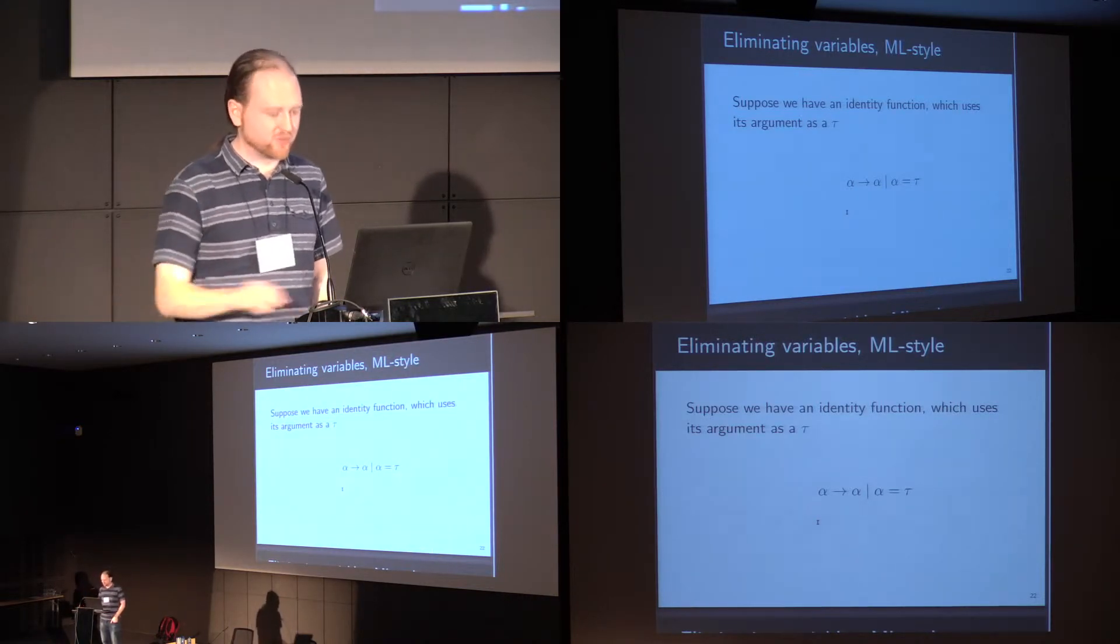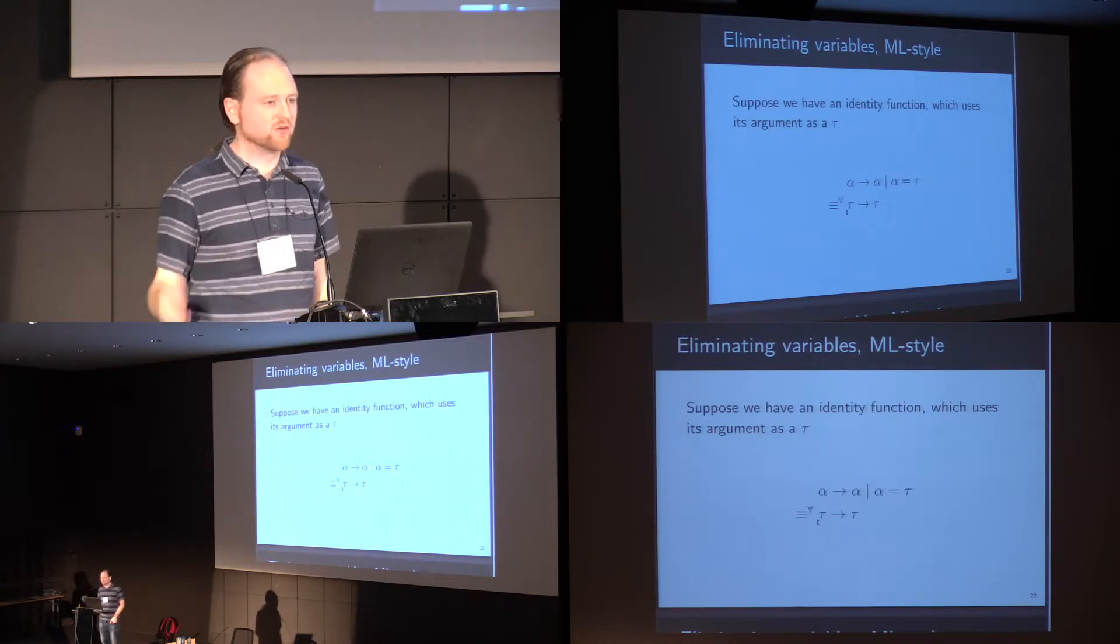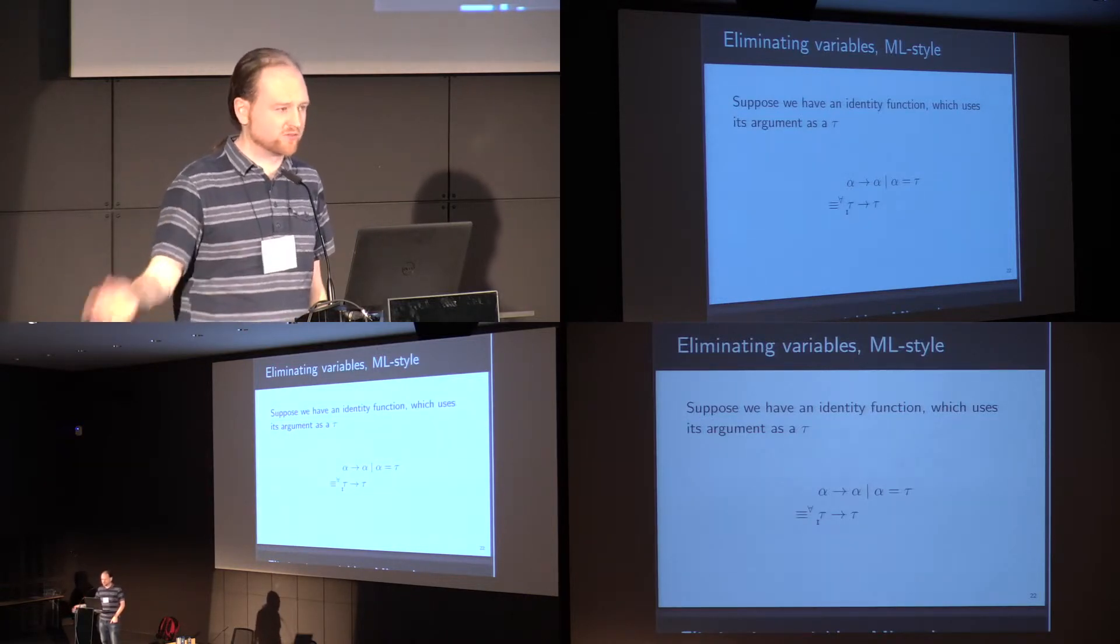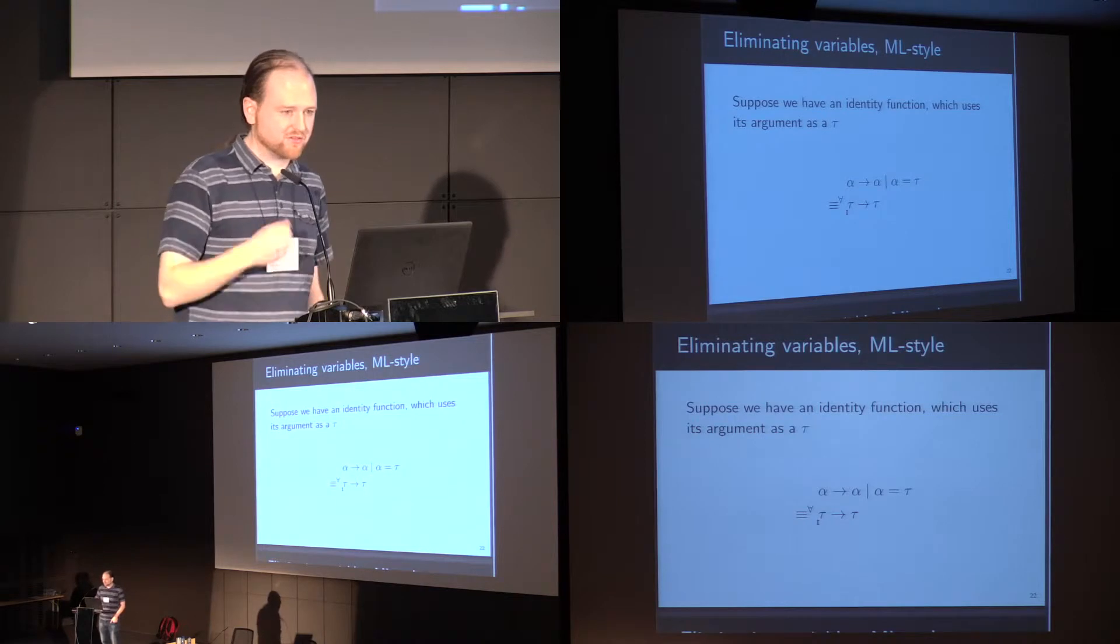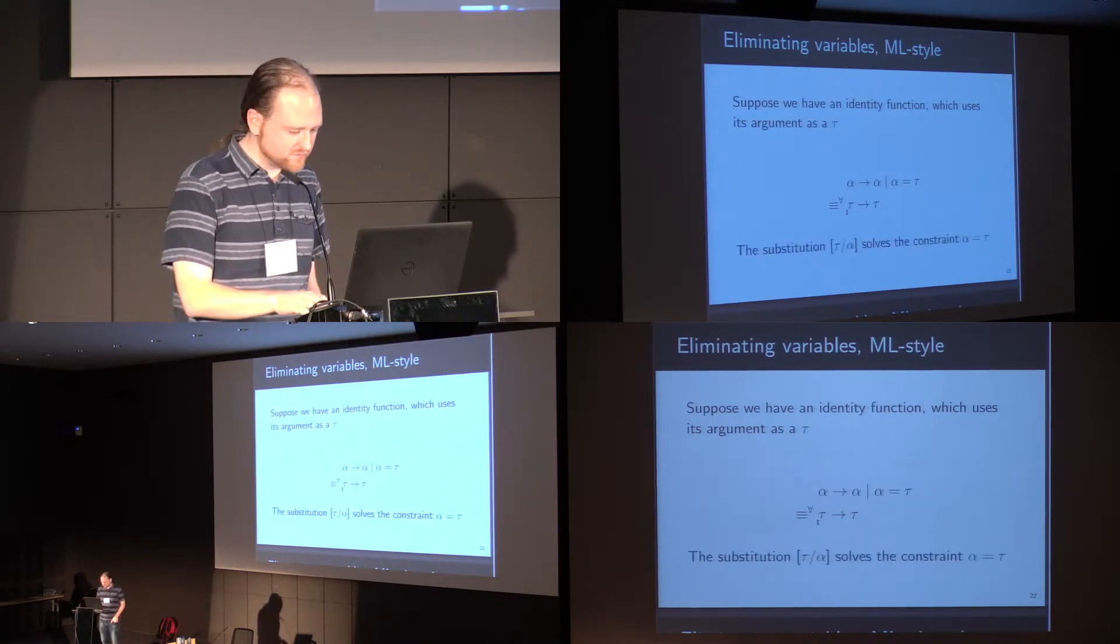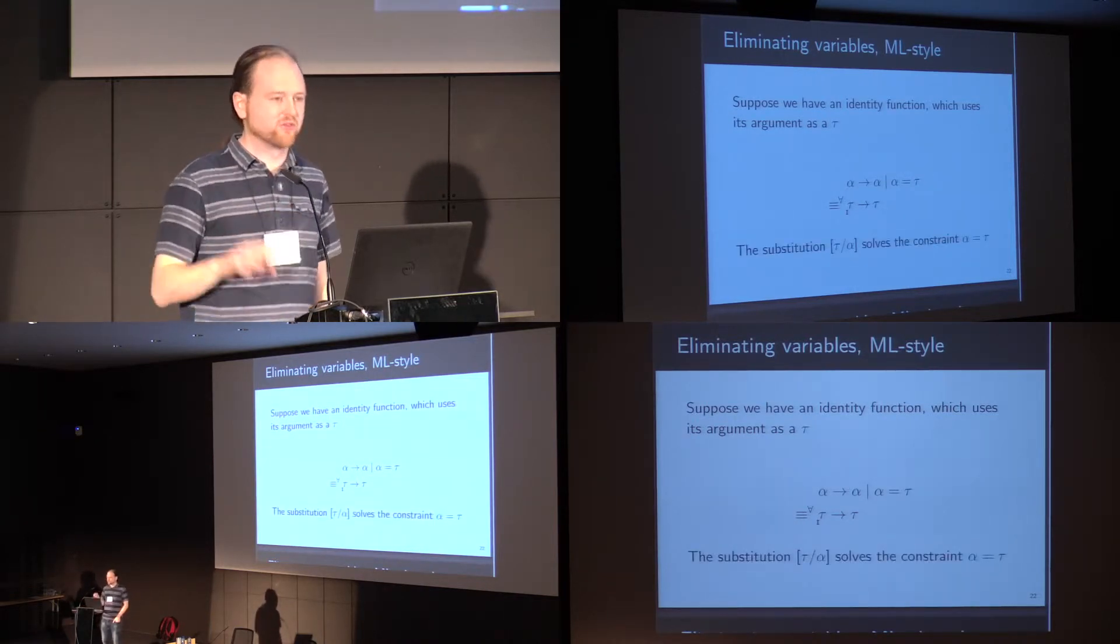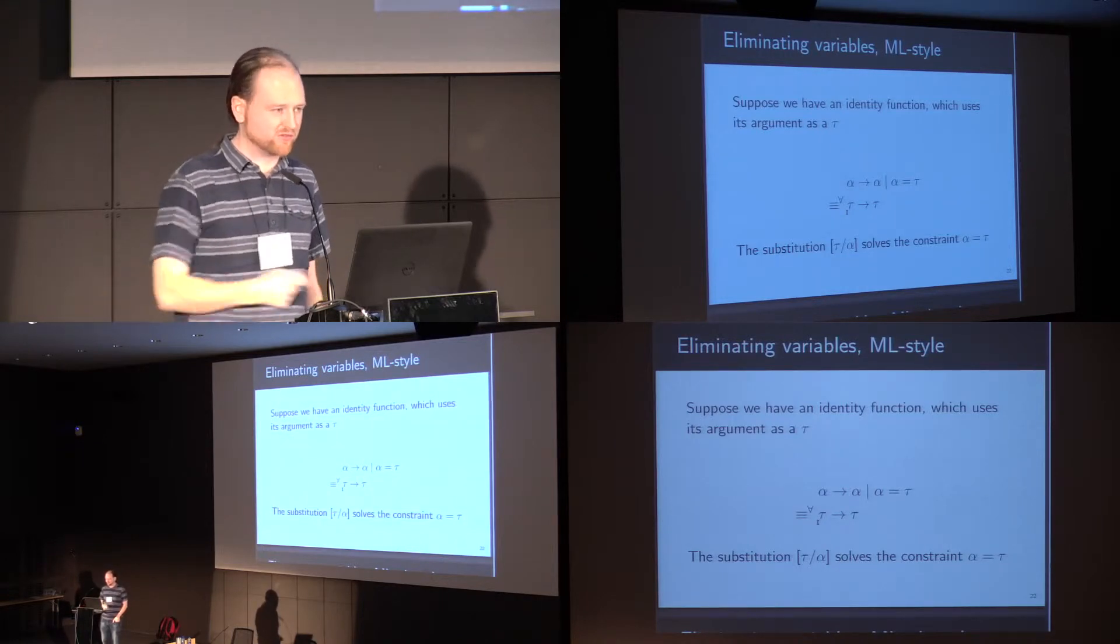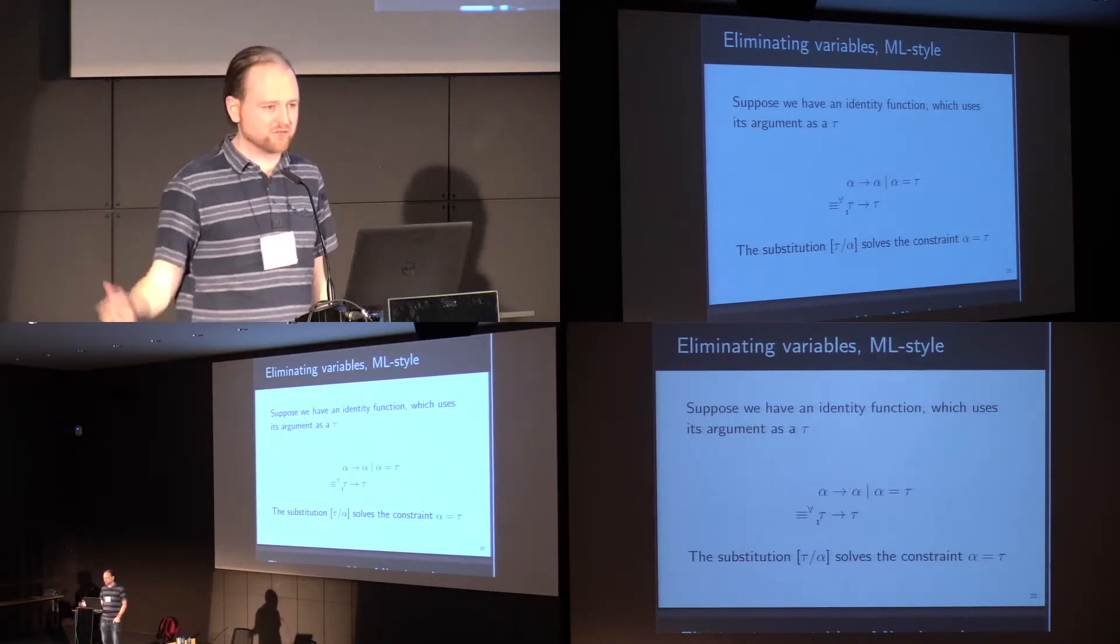We solve that constraint with a substitution by replacing all occurrences of alpha with t, and we get the result t to t. So the substitution of replacing all occurrences of alpha with t solves the constraint that alpha equals t.